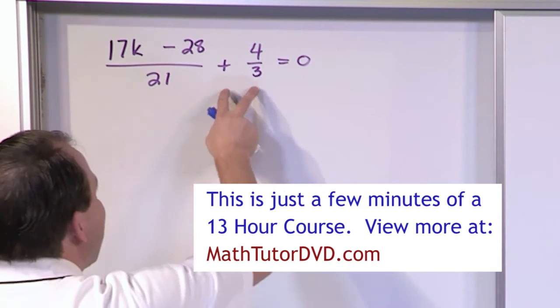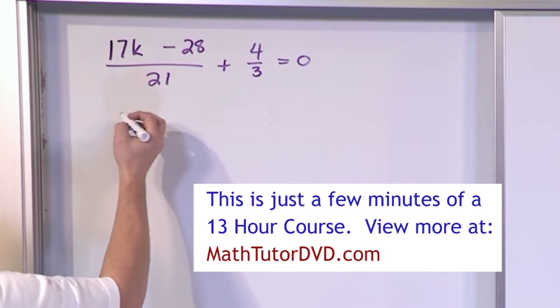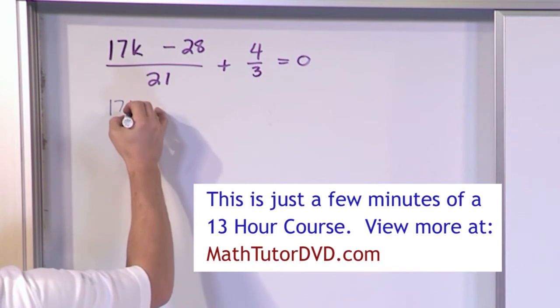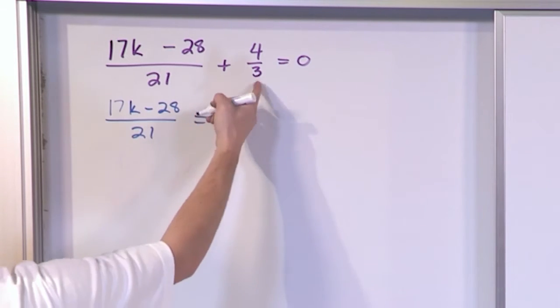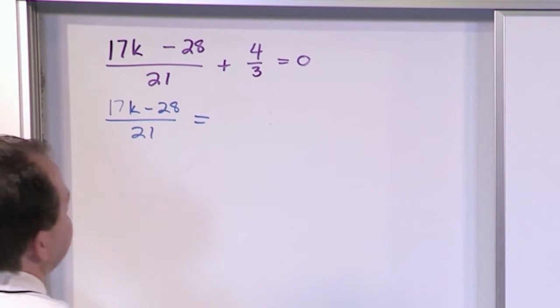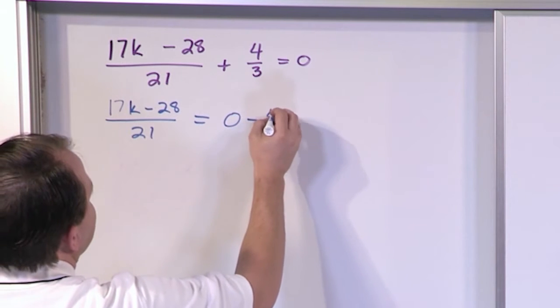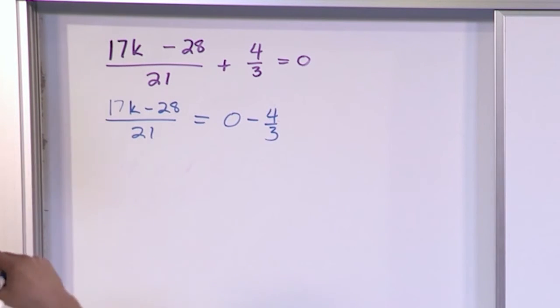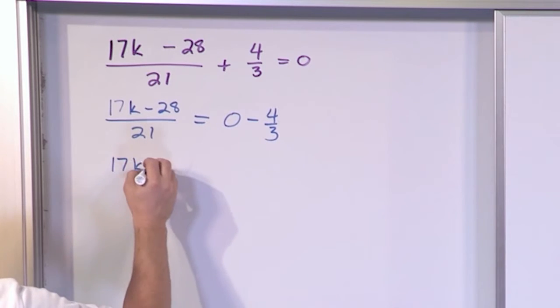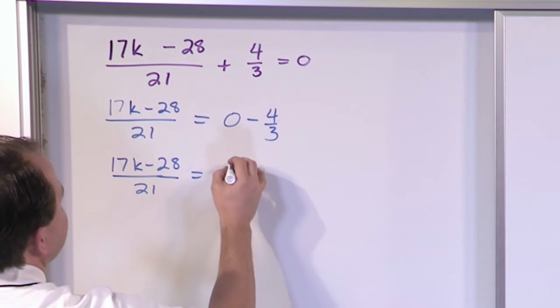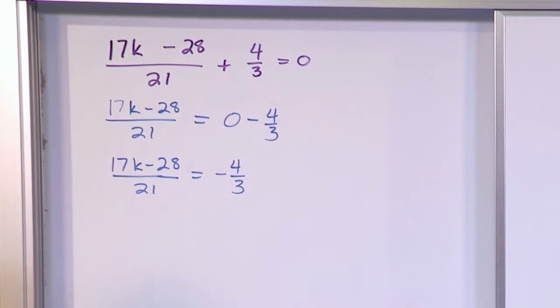So what we want to do is subtract 4 thirds. So on the left, all we're going to have is 17k minus 28 divided by 21. That's all we're going to have on the left because we subtract 4 thirds. That's going to disappear. Zero minus 4 thirds on the right. So this gives you 17k minus 28 over 21 equals negative 4 thirds. And I know fractions seem like a pain, but it's not going to be that hard.